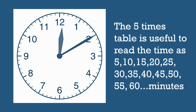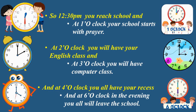So students, to understand the time in a better way, you can use the five times table. Here you can see the clock. You can see times related to your daily life. In the first clock, the short hand — the hour hand — is between 12 and 1, and the long hand — the minute hand — is on 6. So students, 12:30 PM is when you reach school. In the second clock, the short hand is on 1 and the long hand is on 12 — it is exactly 1 o'clock. At 1 o'clock your school starts with prayer.